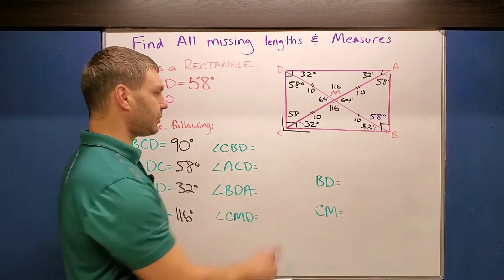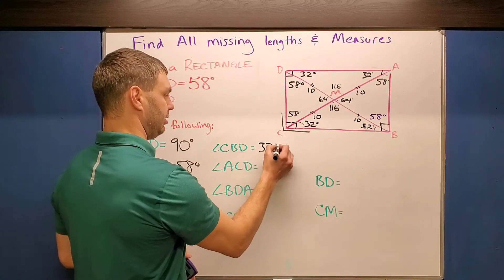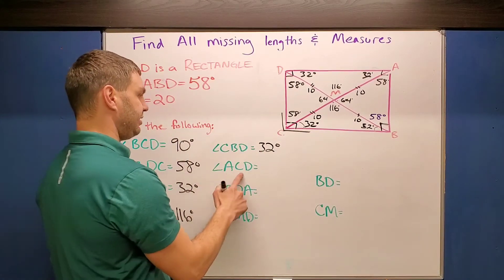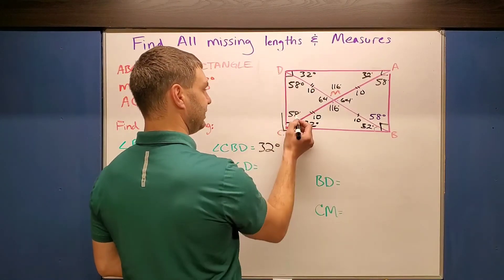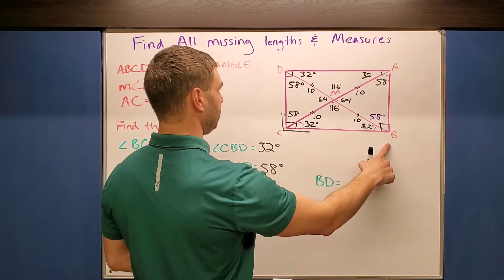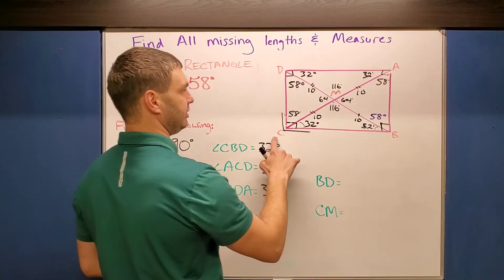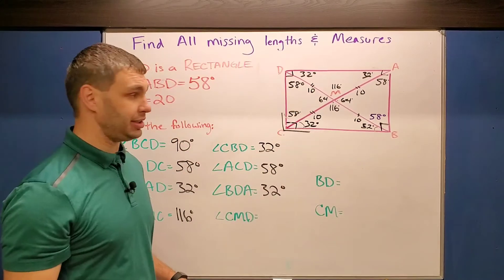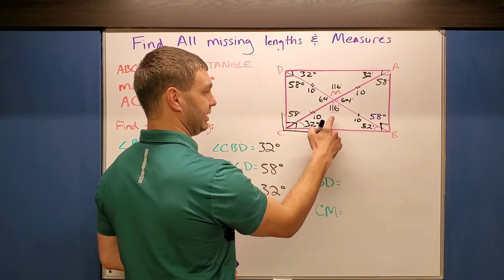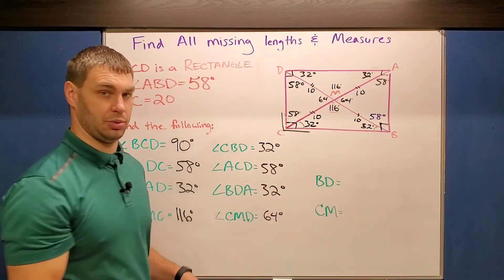Next: CBD is 32 degrees. It's kind of nice when you fill everything in to begin with — you get a ton of answers fast. ACD is this one, which is 58 degrees. BDA is 32 degrees. CMD is 64 — that's one we found earlier: after finding 116, I did 180 minus 116 to give me 64, since those form a linear pair.